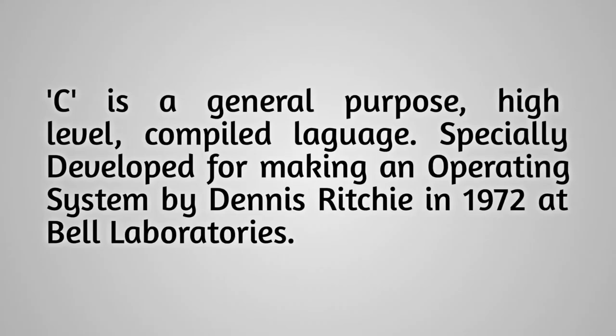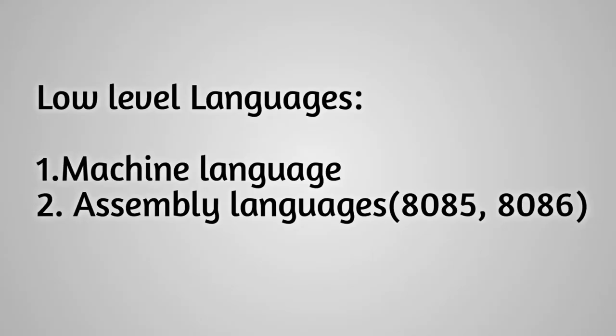C language is a general-purpose, high-level combined language which was created in 1972. Its main purpose was to build operating systems. Previously we had low-level languages — machine language, binary language, and assembly language — which were very difficult to understand.